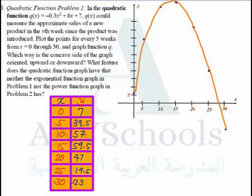Now we can answer the question: Which way is the concave side of the graph oriented, upwards or downwards? Downwards. As you can see, our orientation for this graph is actually downwards, right? So it's concave down. Why? Because the opening of the graph goes down. So this is concave down.